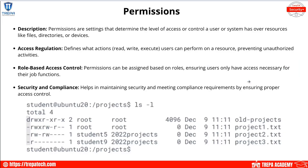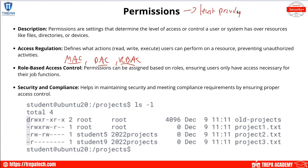We can set permissions on users or systems using different access control schemes. Mandatory access control is based on a need to know. Discretionary access control is when the object owner sets read, write, and execute permissions. Role-based access control (RBAC) determines permissions based on the user's role. With permissions, you always want to enforce the concept of least privilege — whether in an Active Directory environment, setting permissions locally on a Windows machine, or on Linux devices.